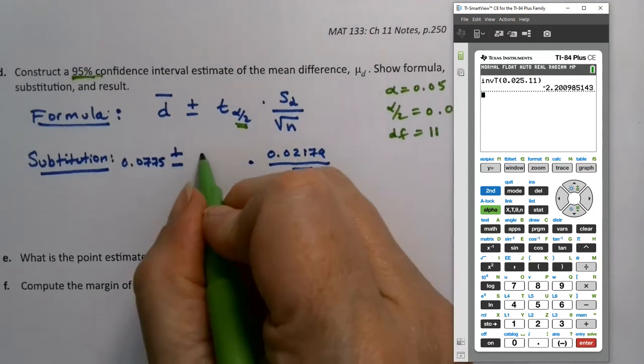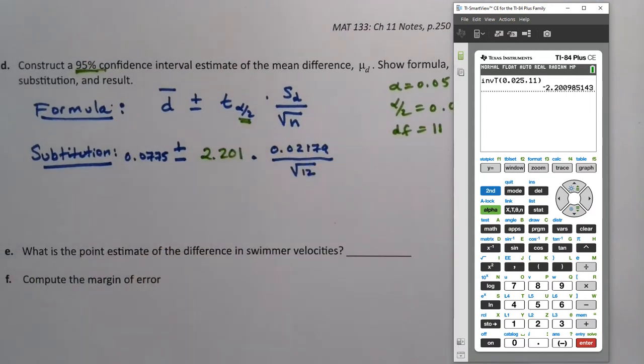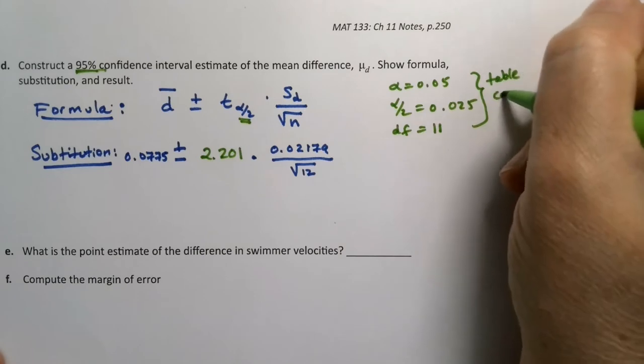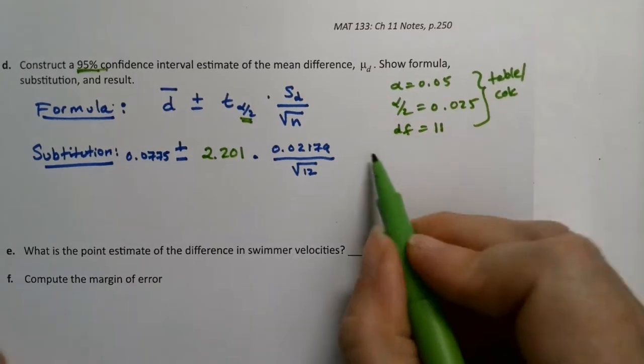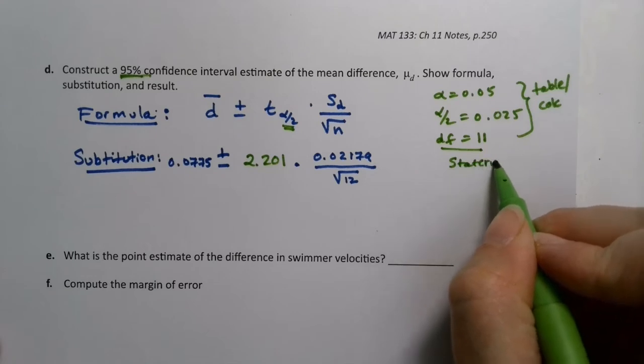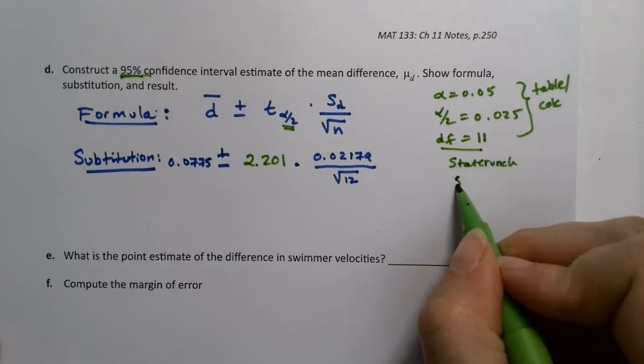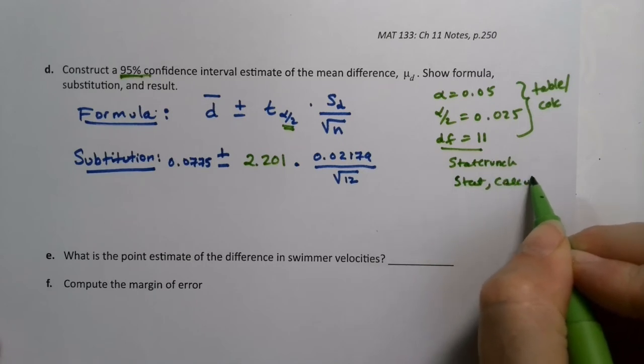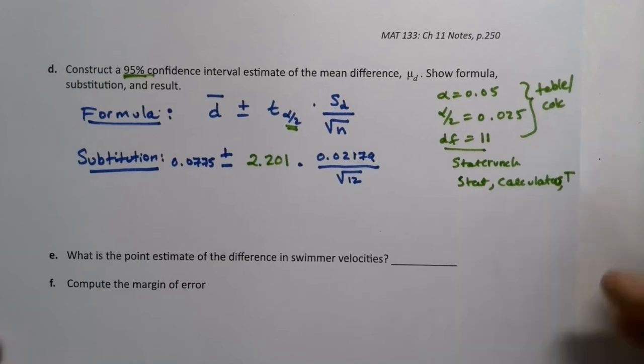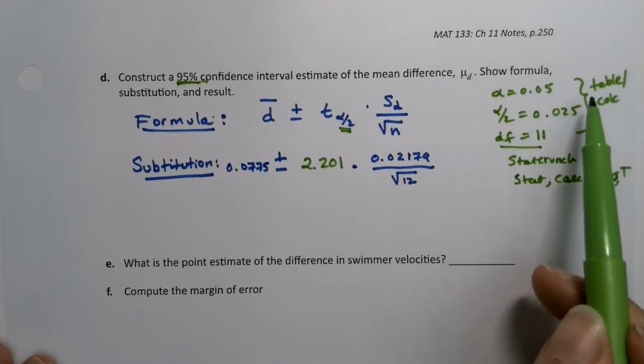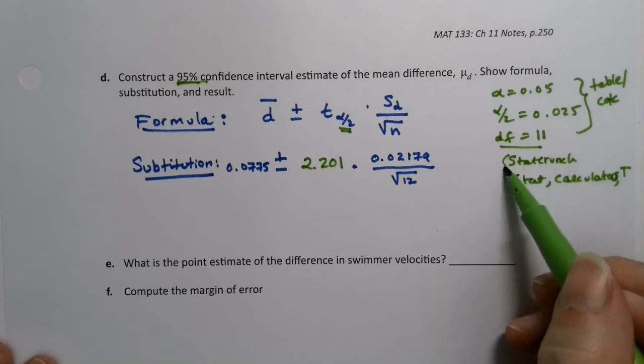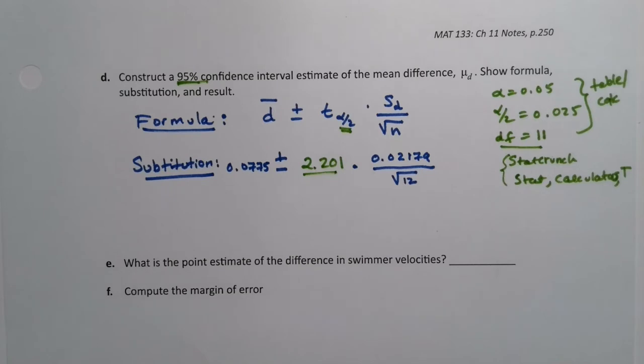So one way or another, whichever way you like, you have to get that it's 2.201. If you're using the table or the calculator, you need these pieces. If you're using StatCrunch, you actually don't need any of this. Either way you want to do it—table, calculator, StatCrunch, whatever way makes you happy—figure out how to find that t value. That's the hardest part about this problem, reminding yourself how to do that piece.